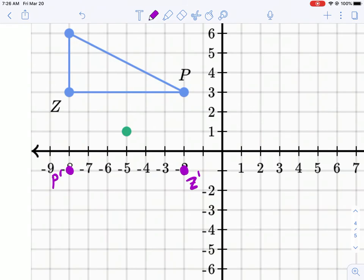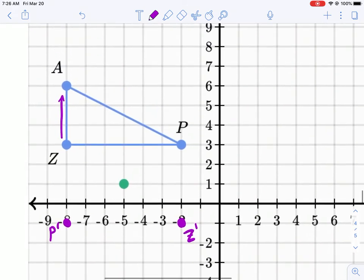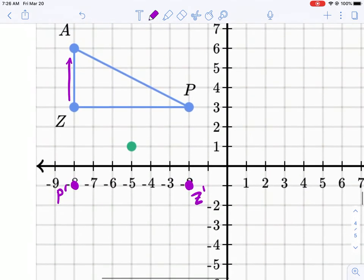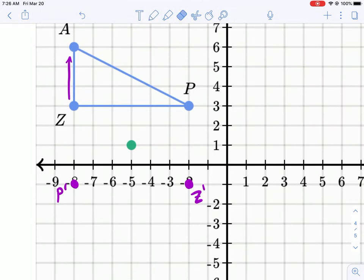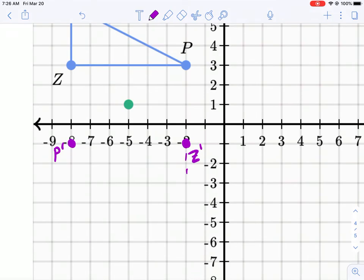With that in mind, we know that Z is three units vertical from A. So we need to maintain that relationship. So we need to go three units from Z. One, two, three, drop down our A.